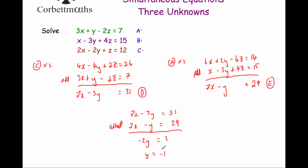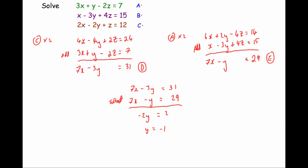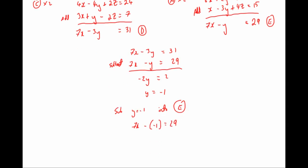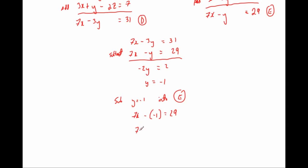We've got our value for y, which is minus 1. Now we substitute that into one of our equations — let's use equation E. So substituting y equals minus 1 into E: 7x minus minus 1 equals 29, which gives 7x plus 1 equals 29. Subtracting 1 from both sides gives 7x equals 28, and dividing by 7 gives x equals 4.